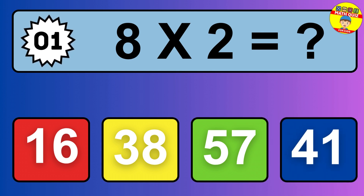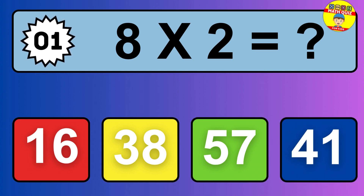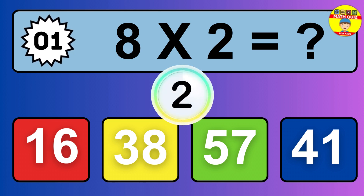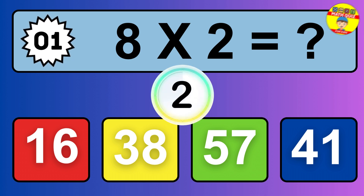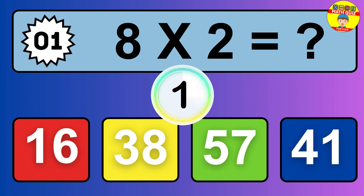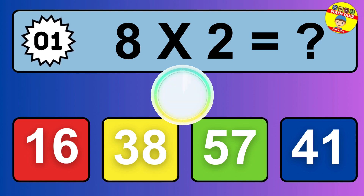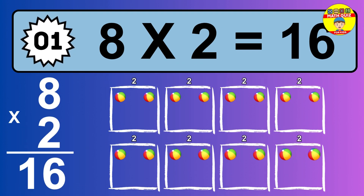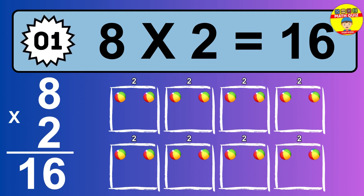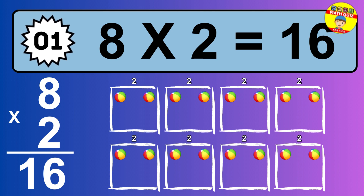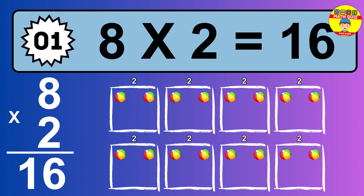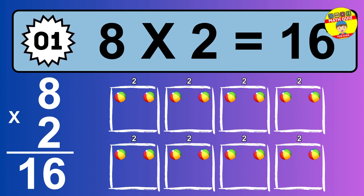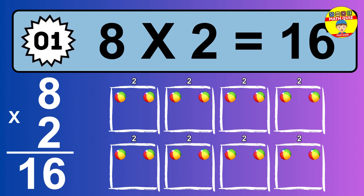Question 1. 8 times 2 equals what? The answer is 8 times 2 is 16. To calculate, we have 8 groups with 2 balls each one. So, how many balls do we have? 16 balls.